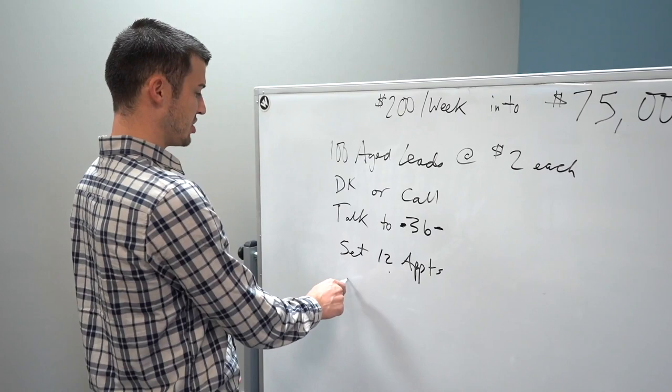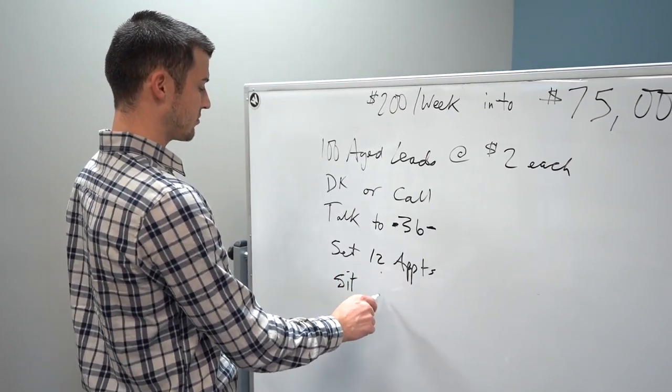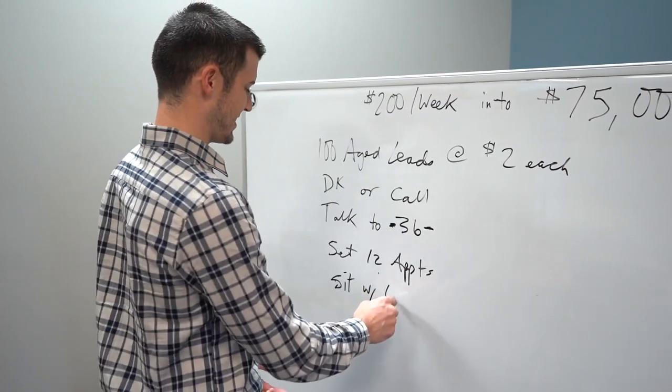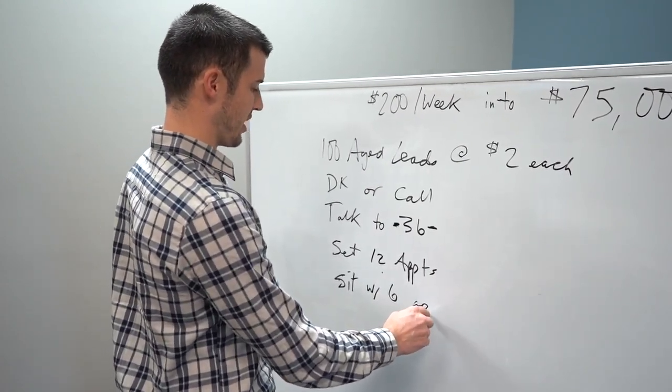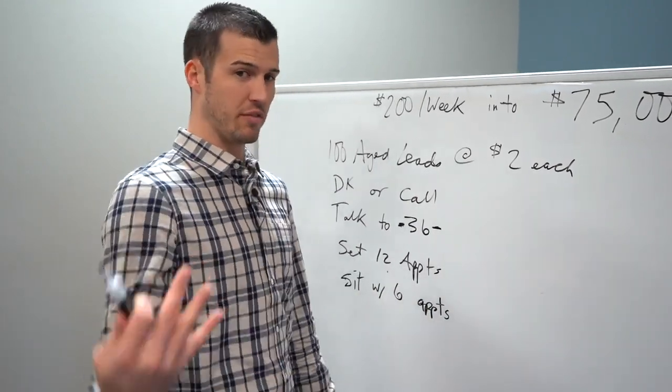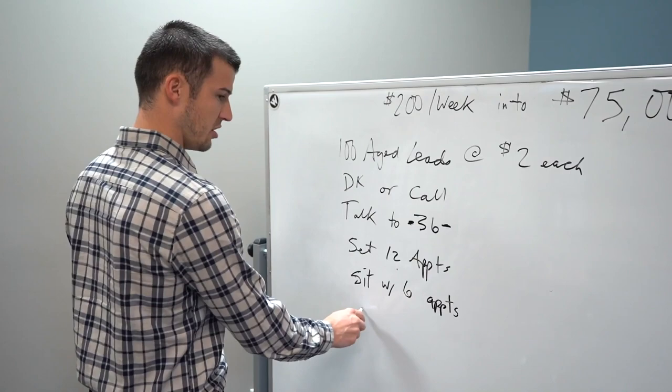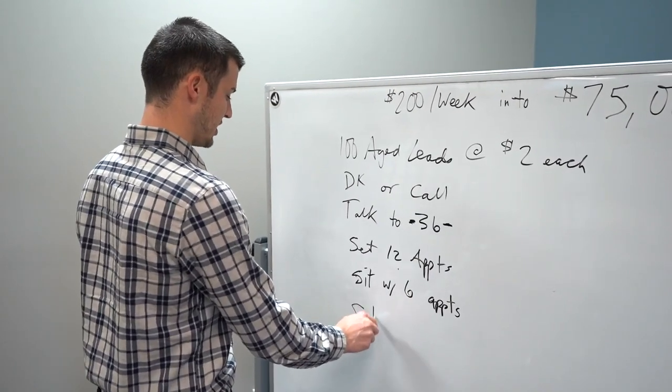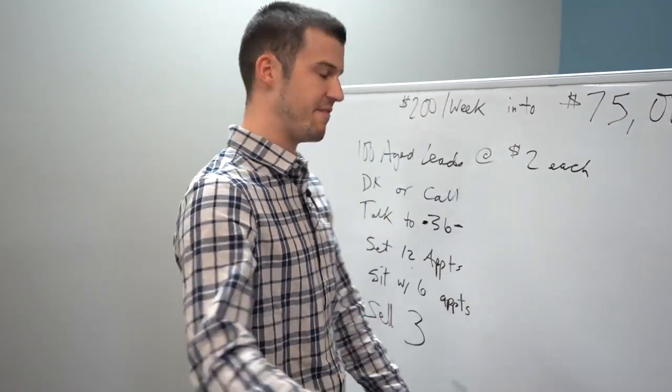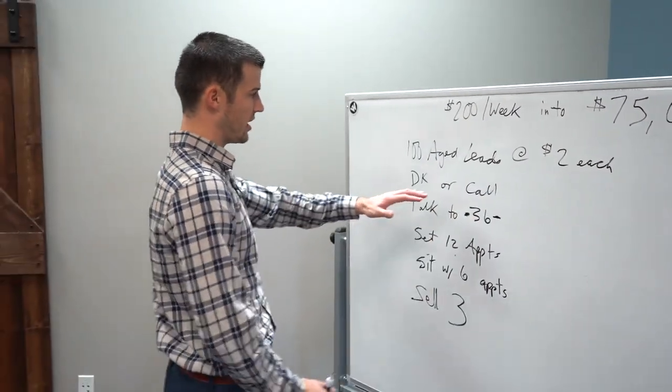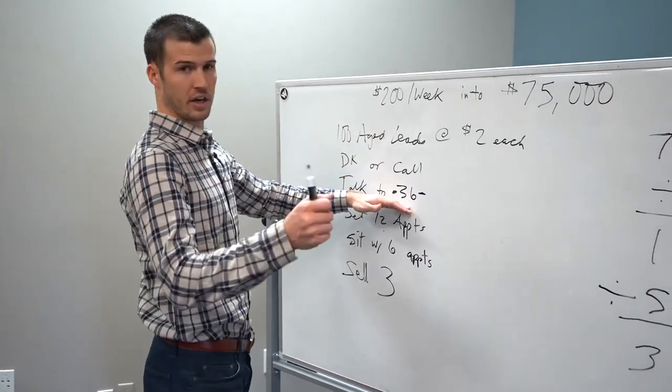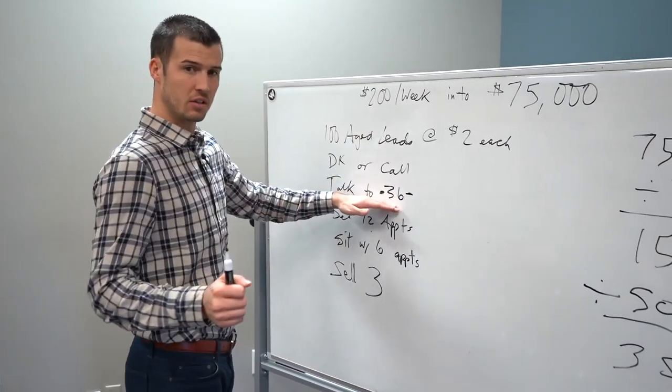And these are all really conservative numbers, especially this, right? Because if not, something's wrong. 12 appointments. Let's just say you have an awful week and you only sit with six, which if you don't have a 50% sit rate, if you don't have above that, something's wrong, we can fix that too. And then let's just say, you know what dude, I actually sell three.